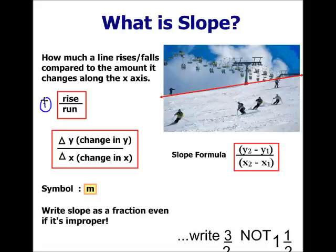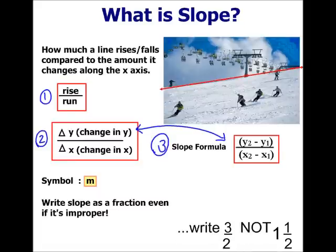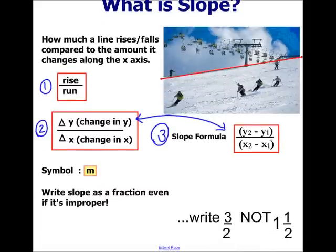We can represent slope in three different ways. First is the rise over run. The second is delta y over delta x or change in y over change in x. And the third is the slope formula, which is the difference of my y-coordinates over the difference of my x-coordinates, and we just designate that with subscripts.